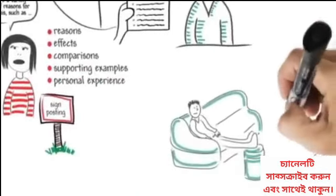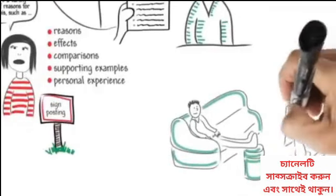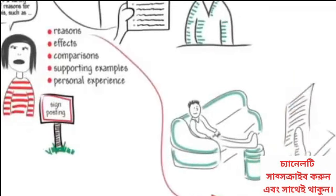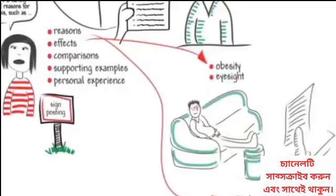For example, discussing excessive TV watching, you might mention reasons: increasing numbers of TV channels compared to a generation ago, and the popularity of TV characters. Effects: increasing obesity levels, eyesight problems, and other health issues.